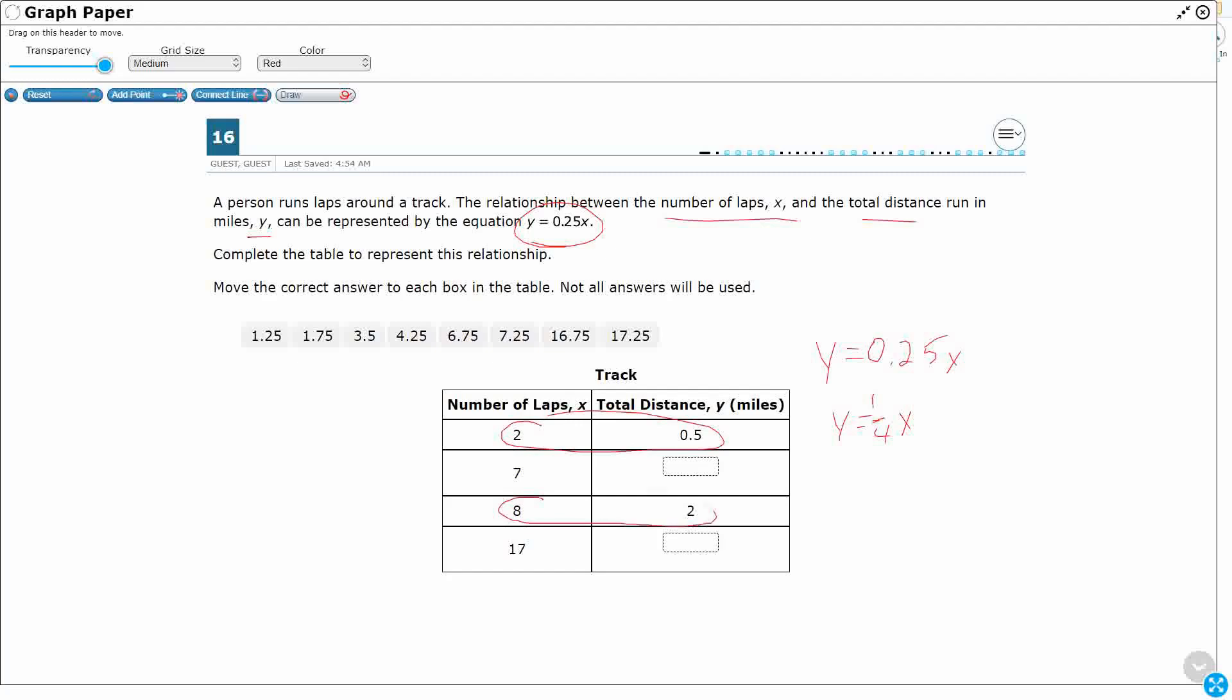We have two relationships here that we know for certain. I'm going to write this y equals 0.25x. I'm going to substitute in, my x first is going to be my 2, my y first is going to be 0.5. So let's say 0.5 equals 0.25, and then my x is 2. If I double 0.25, I'm going to get 0.5. I could do the multiplication, but remember,